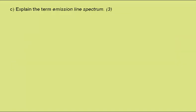Part C: explain the term emission line spectrum. There's three marks so we need to make sure we have three good points. I'll put a few down here.